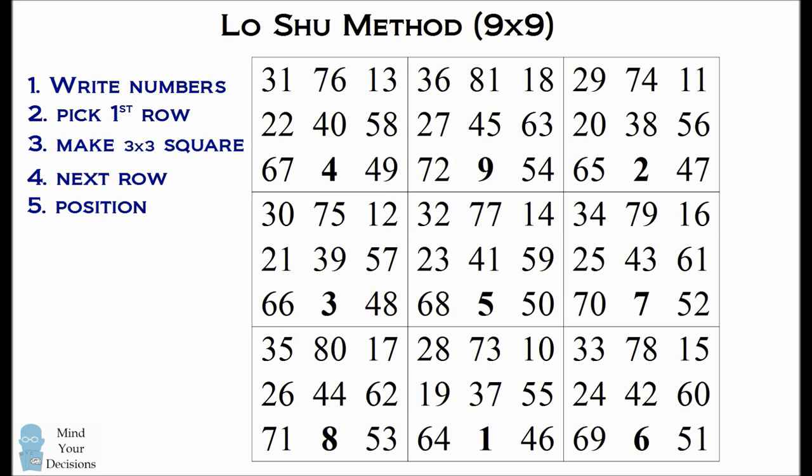This is a 9 by 9 magic square, which is built up from small 3 by 3 magic squares that we started out using the Lo Shu technique. And each of these 3 by 3 magic squares is a magic square itself, and I've put in bold where the numbers are.